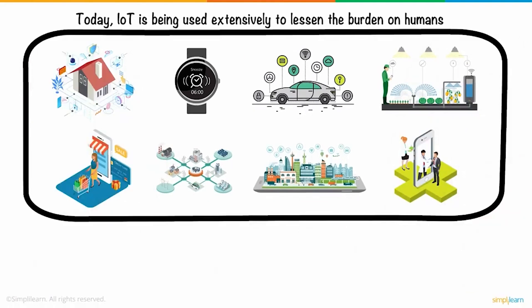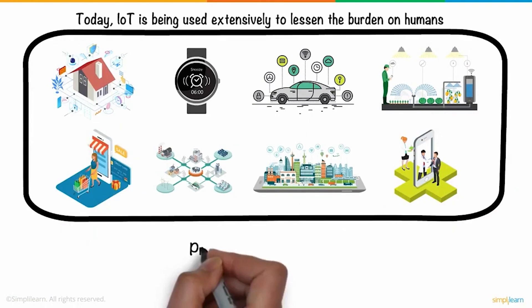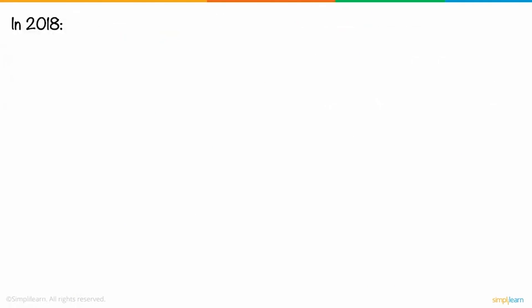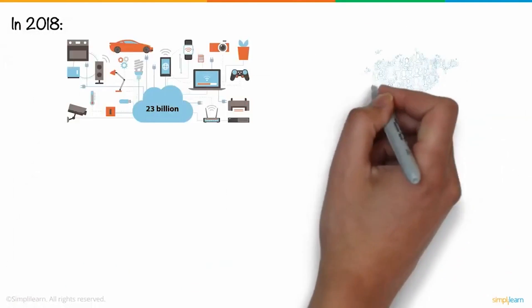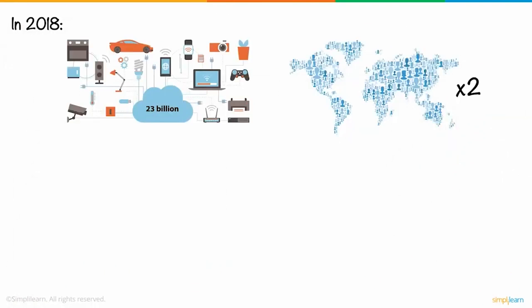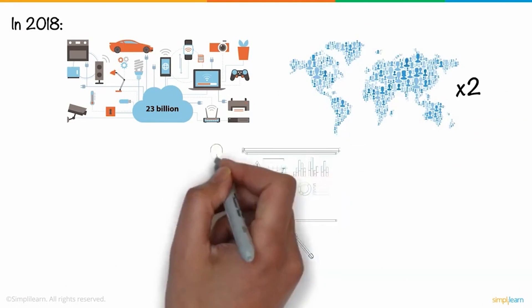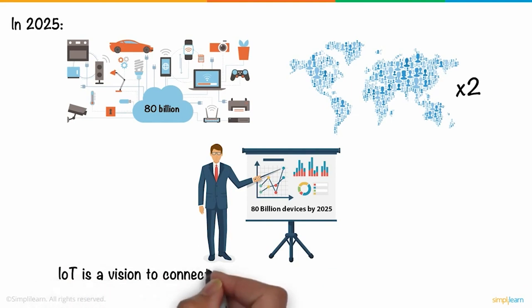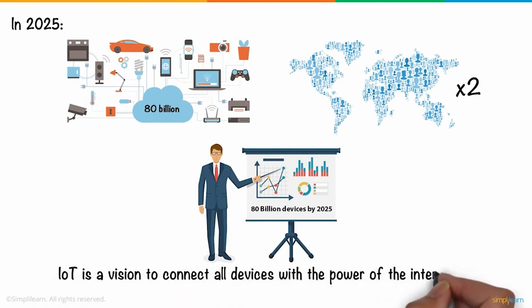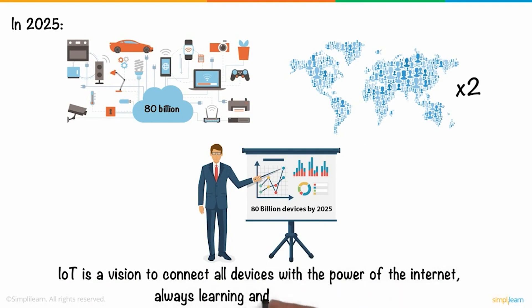With such a wide spectrum of applications, the future of IT looks more promising than ever before. In 2018, there were about 23 billion connected devices, which was more than double the world population. According to experts, there will be over 80 billion devices by 2025. IoT is a vision to connect all devices with the power of the internet — always learning and always growing.